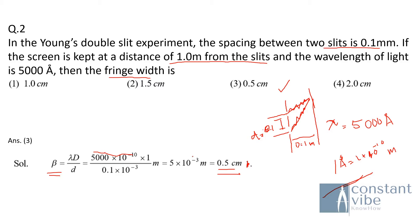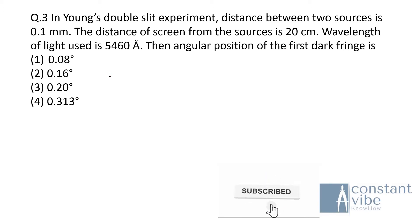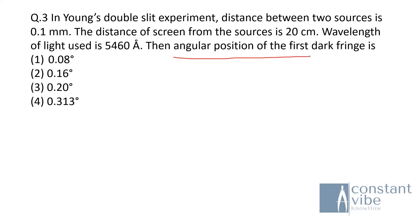Moving to the third question: In Young's double slit experiment, the distance between two sources is 0.1 mm and the distance of the screen from the source is 20 cm. The wavelength of light used is 5460 Ångström. We need to find the angular position of the first dark fringe.